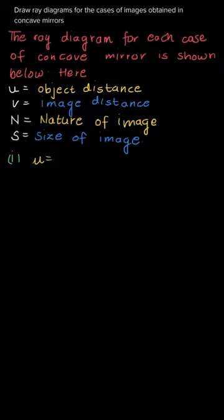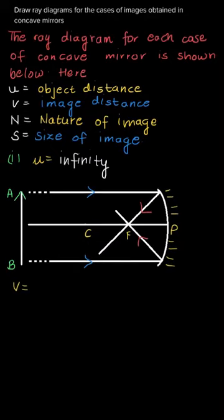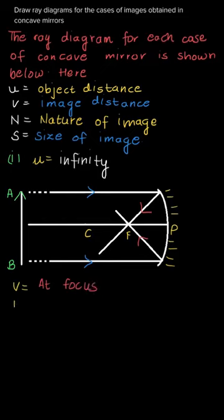First we will draw the first case: the object is kept at infinity. The rays are coming from infinity, and since they are coming from infinity they should be parallel to the principal axis. Rays parallel to the principal axis are converged to the focus, so the image is formed at the focus. The image distance will be at focus.